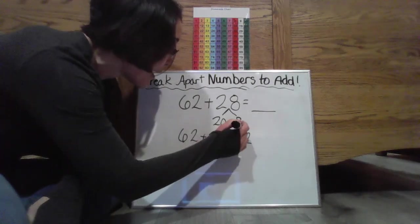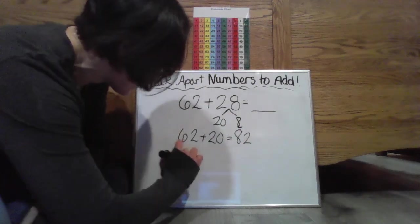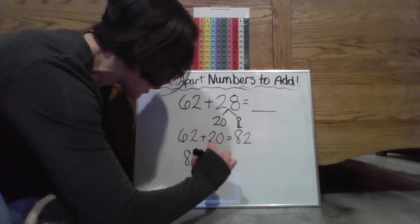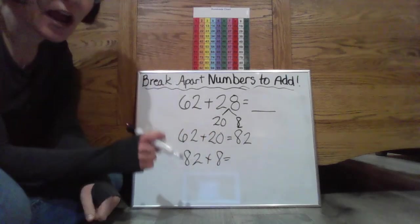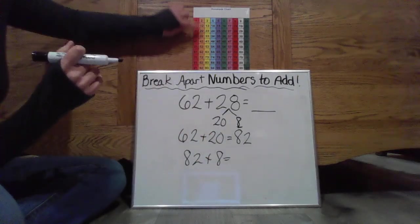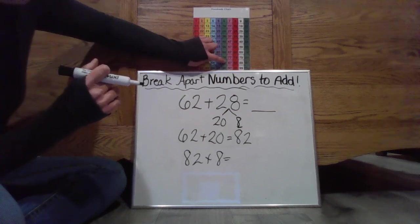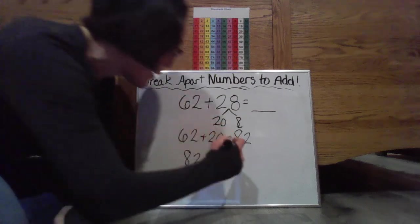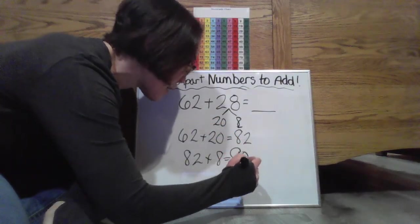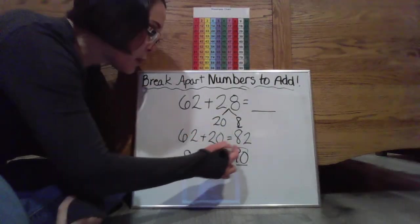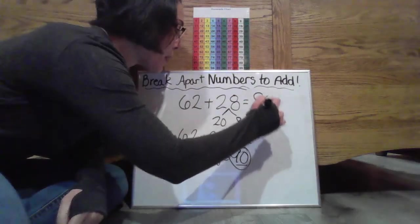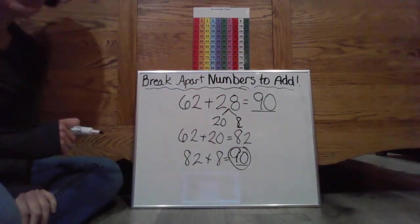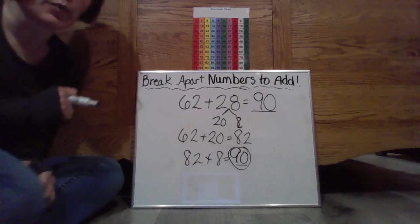82. I'm not done because I still had to add those ones. 82 plus eight is now going to give me. So I'm at 82. One, two, three, four, five, six, seven, eight. I'm going to land right on 90. So that would be my final solution. That would be my final sum. So 62 plus 28 is going to be 90.